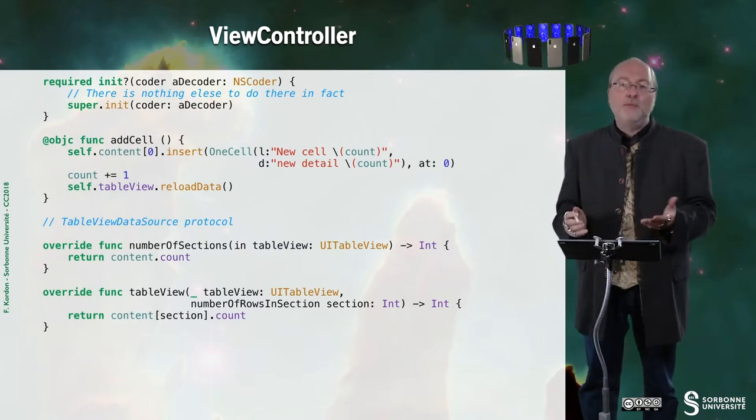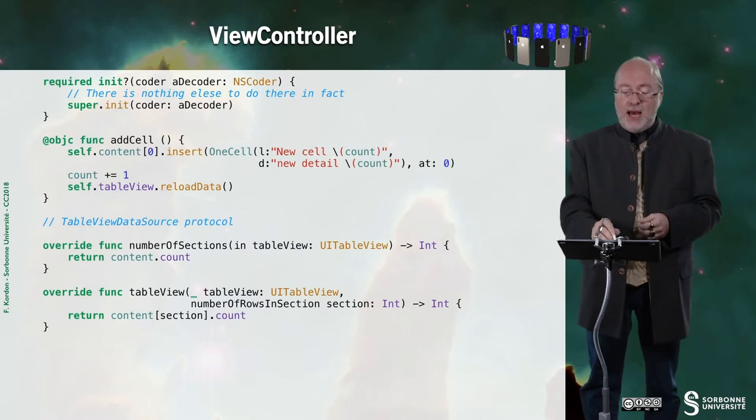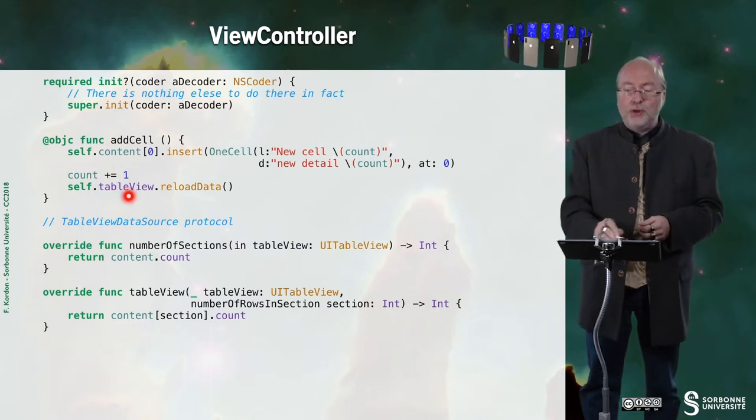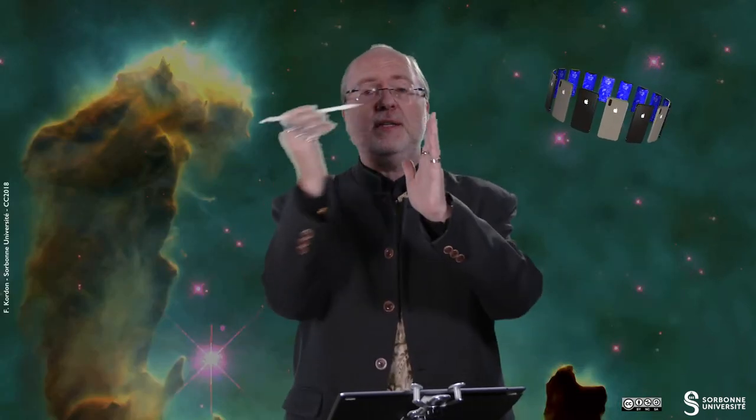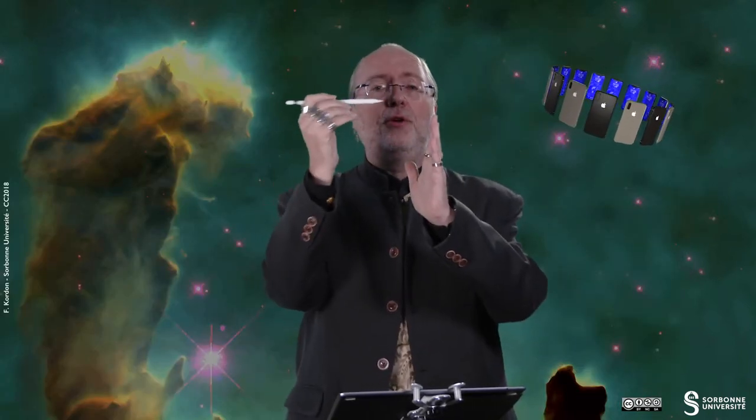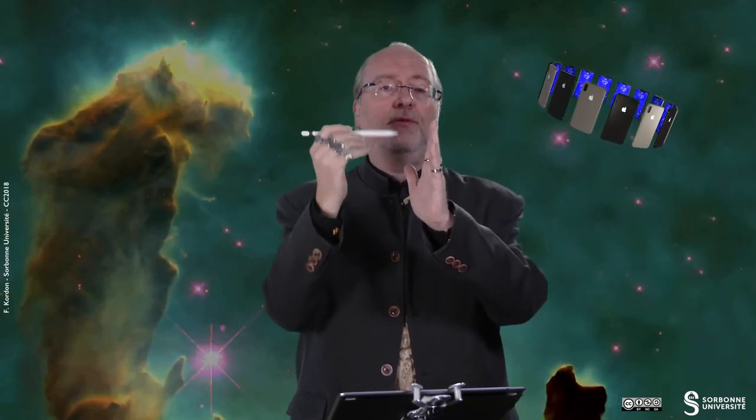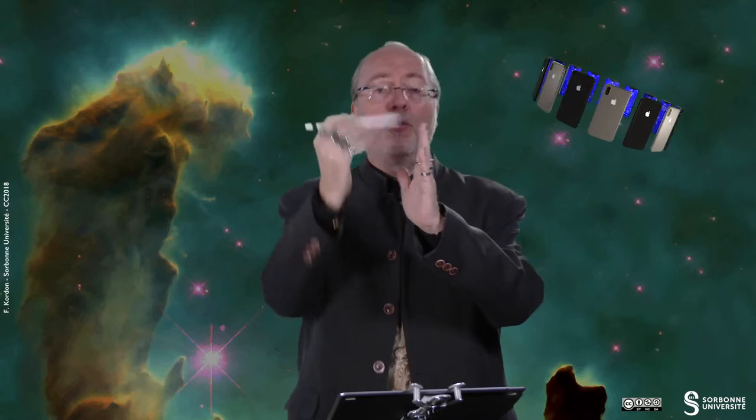This is the required init — I just call super. The addCell behavior is to add a new cell in the first position of the first section. I do a reload data here because the look of the cells depends on their position, so without it the look will not be appropriate.